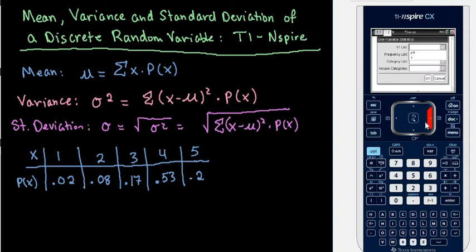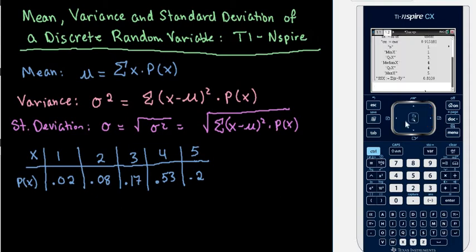For my x1 list, I'm going to choose the variable. I just hit the right arrow and I'm going to scroll down to choose x, my variable x. And this is where we need to use the frequency list. The frequency list is where we put our probabilities. So I would scroll over, or right arrow over, to pick the probability variable, and then I'm going to select OK.